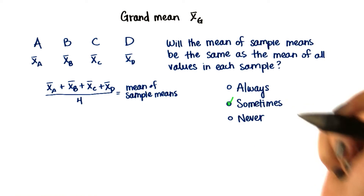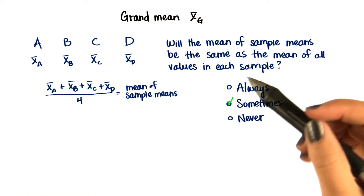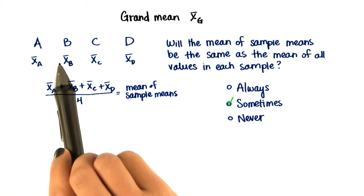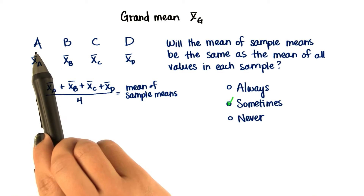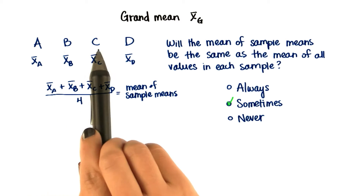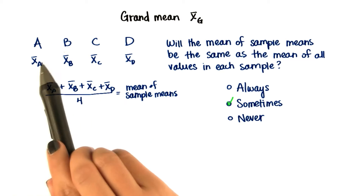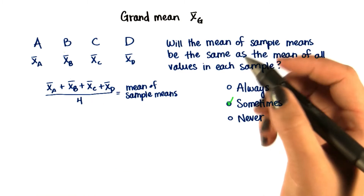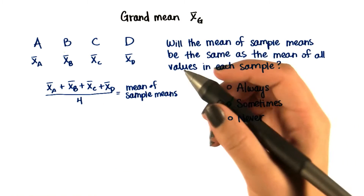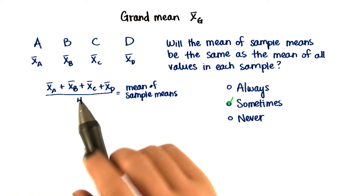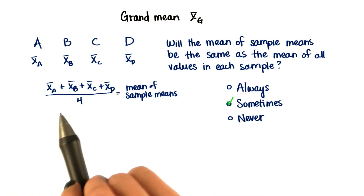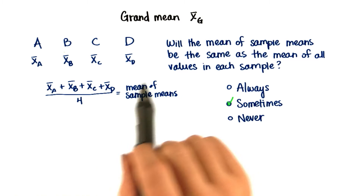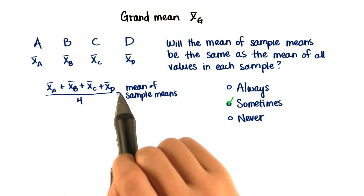The answer is sometimes. When sample sizes are equal — in other words, there could be five values in each sample, or n values in each sample — the grand mean is the same as the mean of sample means, since there's an equal weight to each sample in calculating the grand mean.